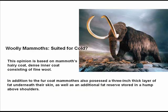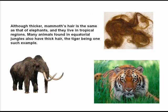But wait a minute. Weren't the woolly mammoths suited to living in a cold climate? That opinion is based on the mammoth's hairy coat and a dense inner coat consisting of fine wool. In addition to the fur coat, mammoths also possessed a 3-inch thick layer of fat underneath their skin, as well as an additional fat reserve stored in a hump above the shoulders. Although thicker, the mammoth's hair is the same as that of elephants, which live in tropical regions. Many animals found in equatorial jungles also have thick hair — the tiger being one such example.